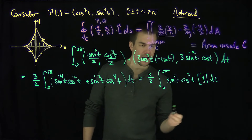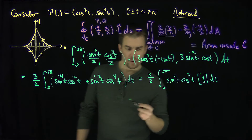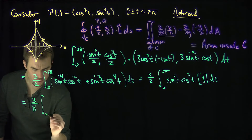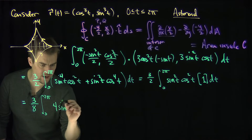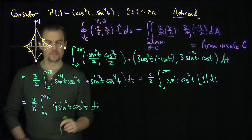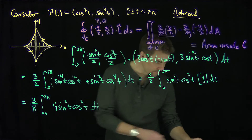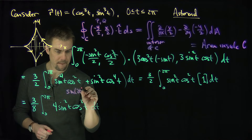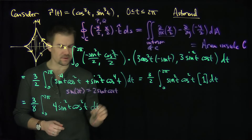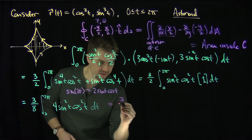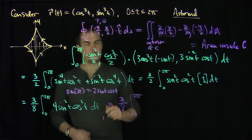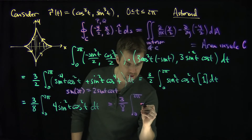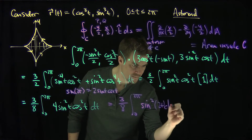Now I'd like to introduce a factor of 4. If I put a factor of 4 in here I have to divide by 4, so this is the same thing as 3 over 8 times the integral from 0 to 2π of 4 sine squared of t cosine squared of t, dt. Recalling that sine of 2t equals 2 sine of t cosine of t, we see that 4 sine squared t cosine squared t is just sine squared of 2t. So this becomes 3 eighths times the integral from 0 to 2π of sine squared of 2t, dt.